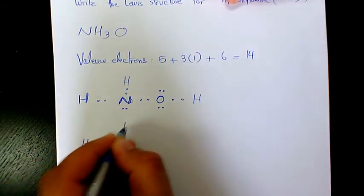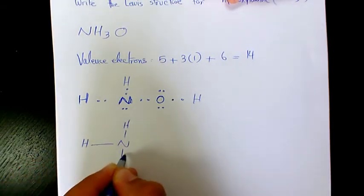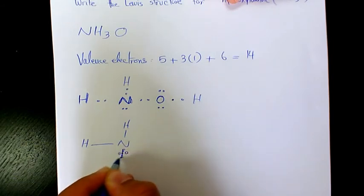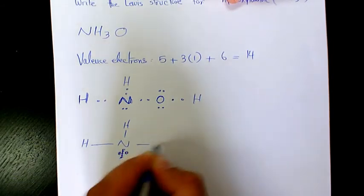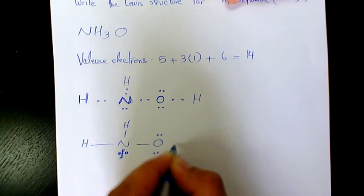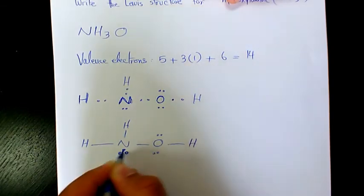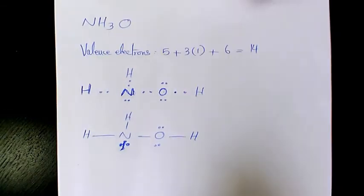So the loose structure... Actually, here I have lone term. So this is going to be the loose structure for NH3O with two central atoms.